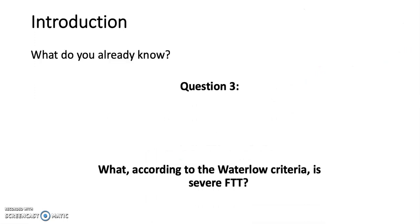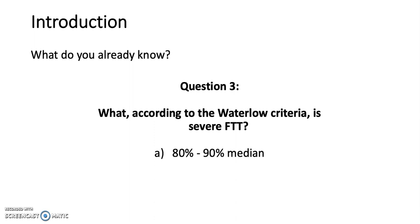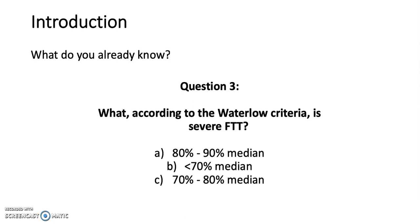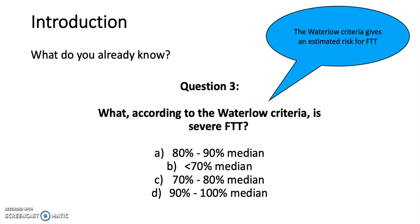Question 3: What, according to the Waterlow criteria, is severe FTT? a) 80–90% median, b) less than 70% median, c) 70–80% median, or d) 90–100% median? The answer is b) less than 70% median.